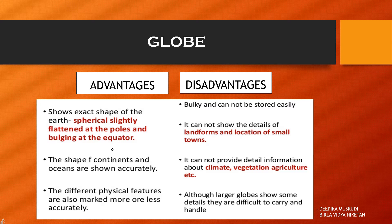Now, some disadvantages: it is bulky and cannot be stored easily as it occupies a lot of space. It cannot show the details of landforms and location of small towns — for example, we can only locate India but not the states or the districts in it. It cannot provide detailed information about climate, vegetation, agriculture, etc. Although larger globes show some details, they are difficult to carry and handle.